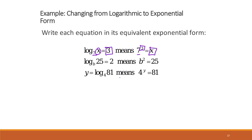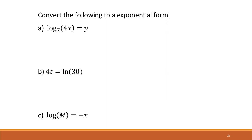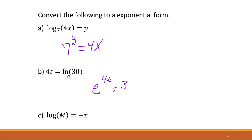Let's do a couple together. Looking here, our base is 7, the solution is y, and we're taking the base of 4x — so this is what it looks like as an exponential function. If we're using the natural log, you have to remember that this is base e. So this becomes e to the 4t equals 30 when we follow the same rule.